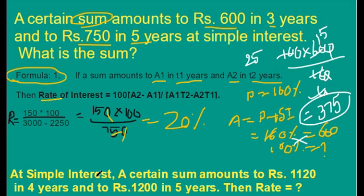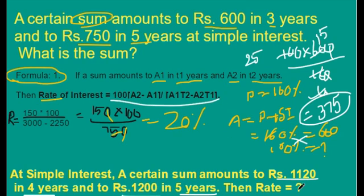See one more problem. A certain sum amounts to 1120 rupees in 4 years, so A1 = 1120 and T1 = 4 years, and A2 = 1200 and T2 = 5 years. By substituting these values in the formula, we can calculate the rate of interest, and if they ask to find the actual sum, we can also calculate the actual principal amount using this method.